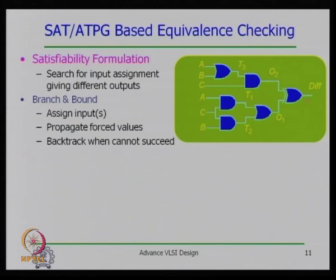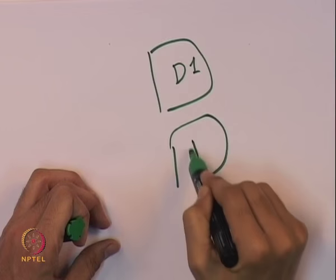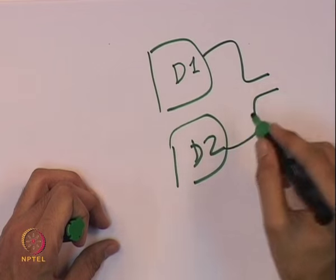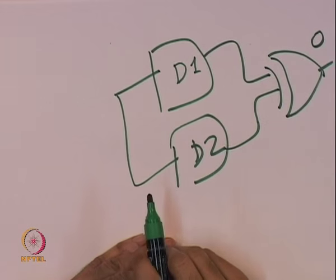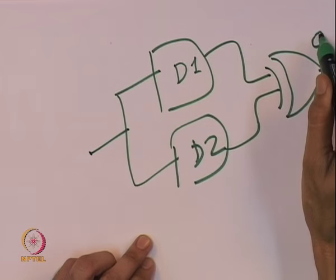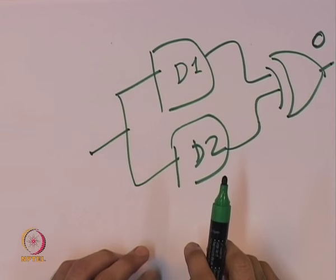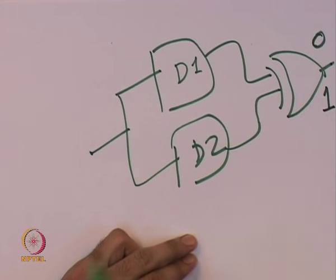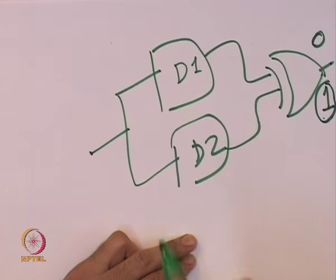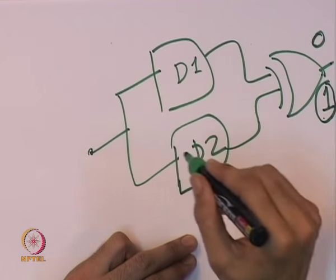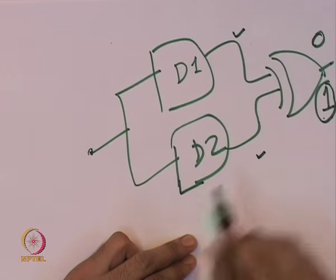Binary decision diagrams are one such compact representation. There are two ways to verify equivalence of two designs: one approach takes the two designs, XORs their outputs, and checks whether the XOR output is always 0 for all inputs. If we find any input for which the XOR gate output is 1, we say both designs are not equivalent — that input is known as the counter example.